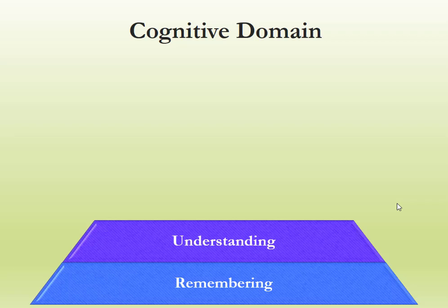The next layer of cognitive domain is understanding. If a student has remembering ability and knows something, then he can move to the next stage called understanding. For example, I know or you may know so many things, but it does not mean that whatever you know or remember, you can also understand. We know so many things but understand only a few. That's why it's a pyramid.